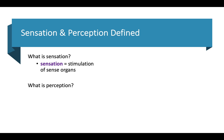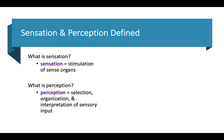Perception is how we select, organize, and interpret sensory information. All of that raw data that we get from our sensory organs, we then start to make sense of it and put it all together. It's how we choose the information that we pay attention to — if we don't pay attention to something, we don't hold on to it. We're constantly getting information from our senses: seeing things, hearing things, touching things, tasting things, smelling things. Perception is what we choose to actually pay attention to and how we put that information together.